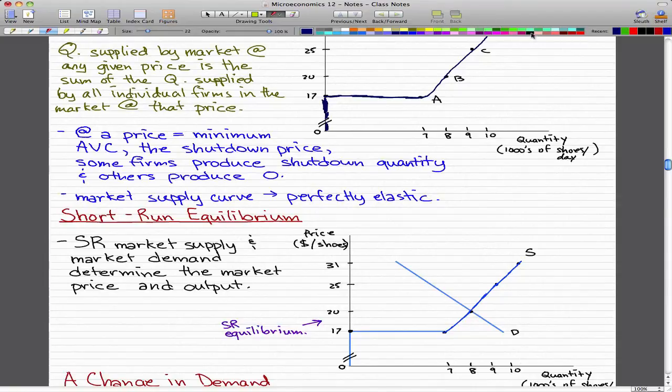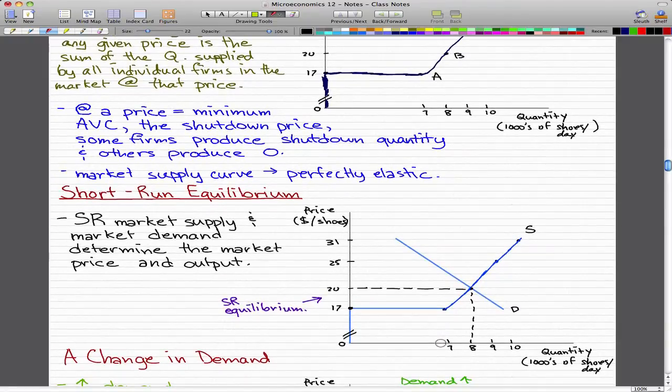So, in this case that we have here, where the demand curve intersects the supply curve, we determine the market price and output to be 20 and 8 respectively. So we're really making 8,000 shoes and the price per shoe is $20 per shoe.